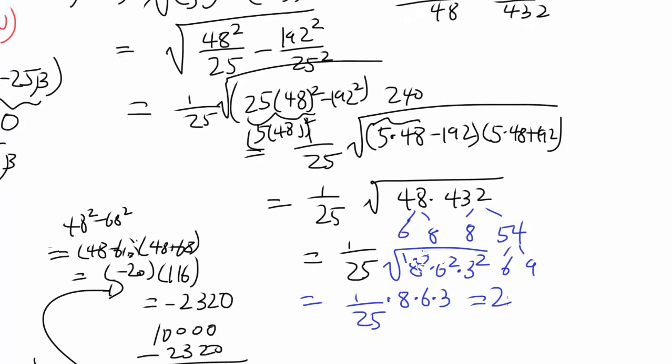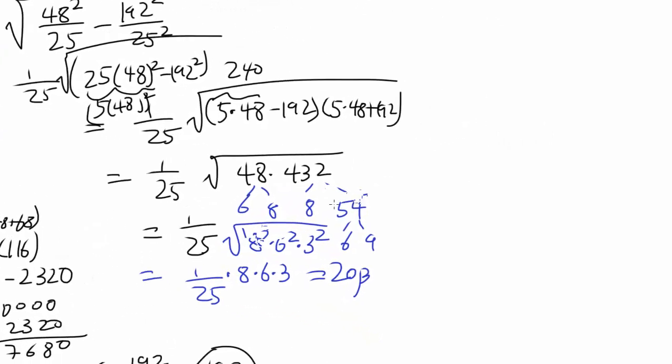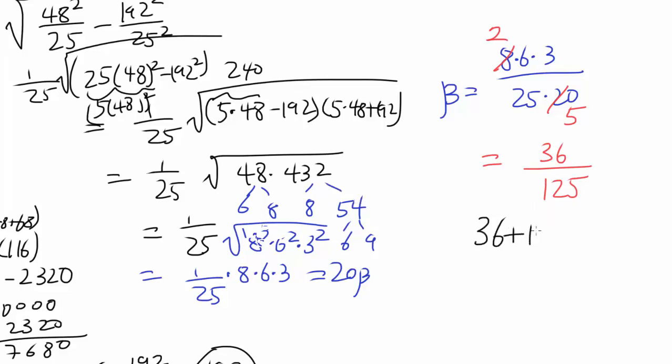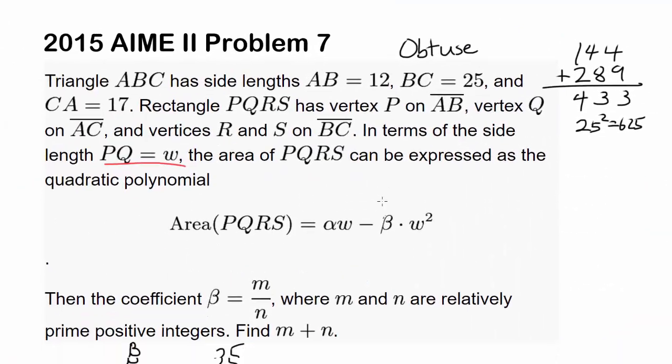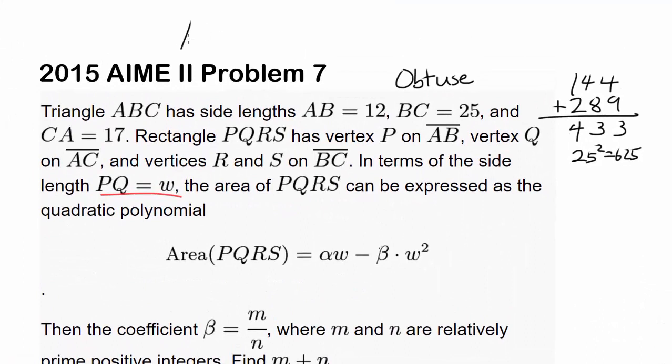Let's prime factorize this. 48 is 6 times 8, 432 we can factor as 8 times 54, and 54 is 6 times 9. So we have square root of 8 squared times 6 squared times 9, which is 1/25 times 8 times 6 times 3. And we know this is 20 beta, so beta is 8 times 6 times 3 divided by 25 times 20. Simplifying we get 36/125. So our answer is going to be 36 plus 125, which is 161. So our answer to AIME 2, 2015 problem 7 is 161.